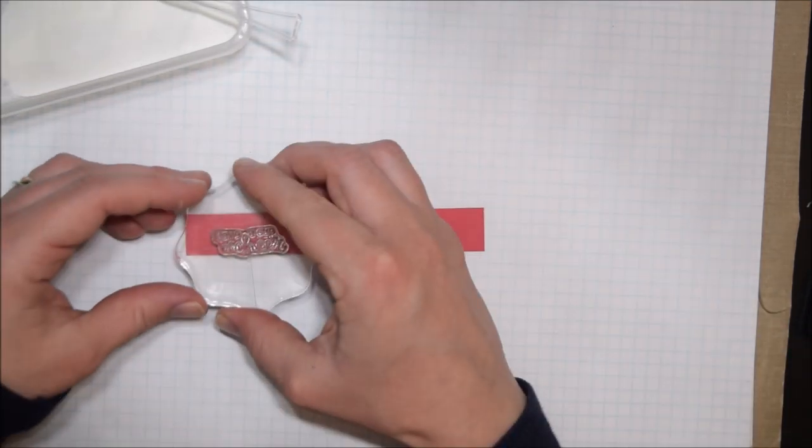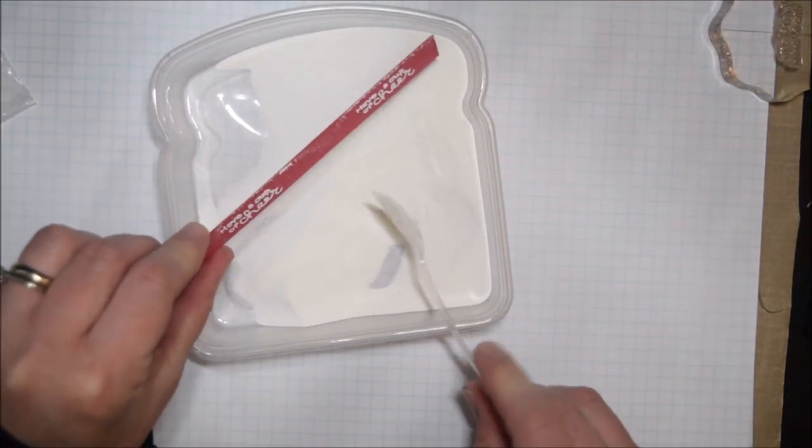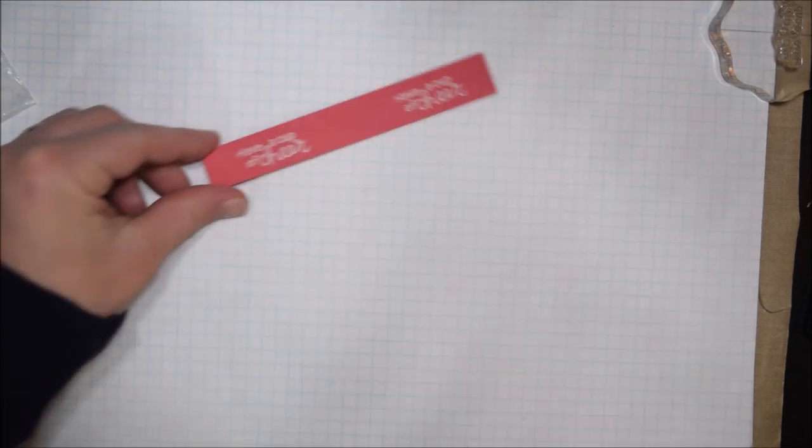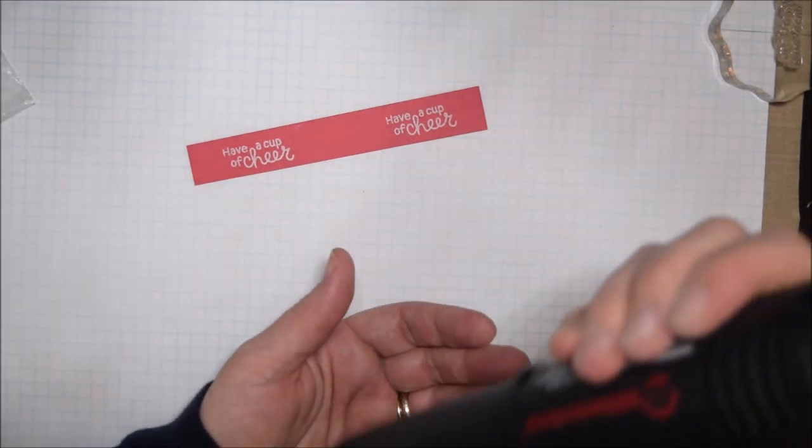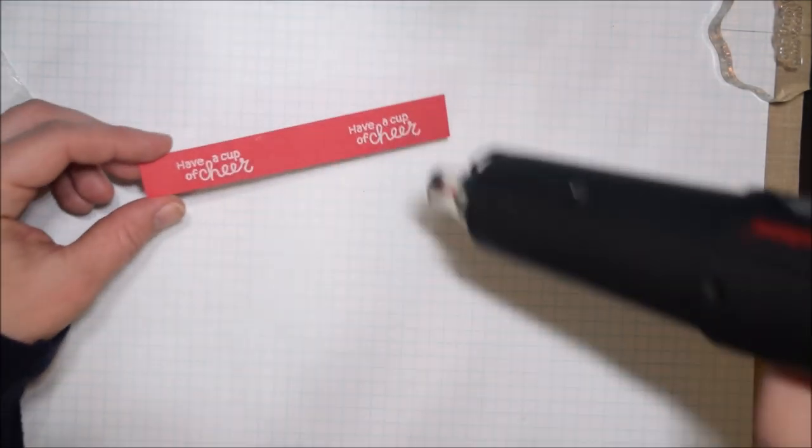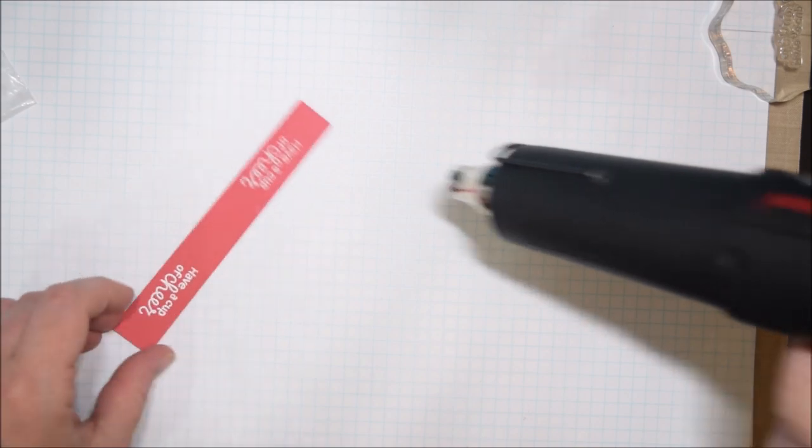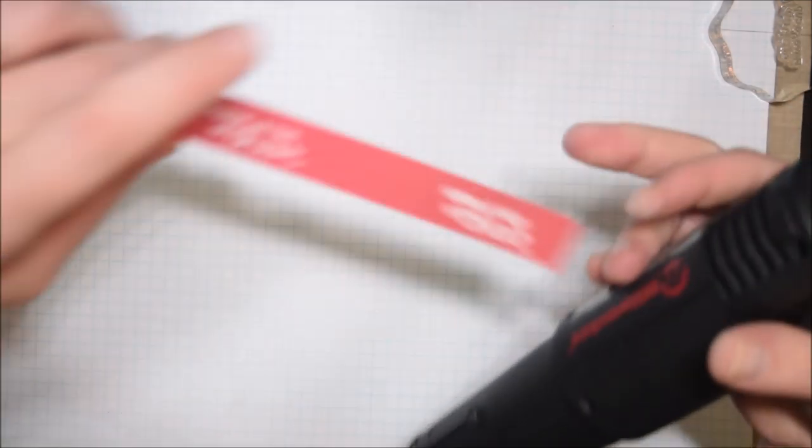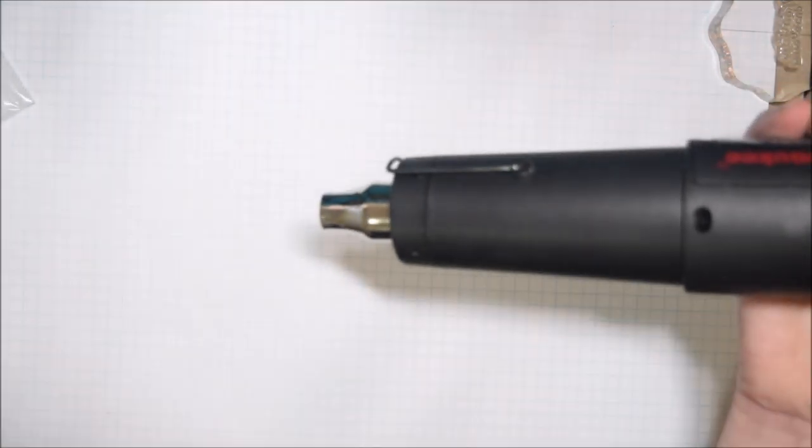I'm going to stamp the sentiment twice on each strip and then cut it down. Normally I'd cut it into a banner, but I wanted to go with something a little different and maybe more simple because part of my inspiration was donating these to the Caring Hearts card drive, which I will link in the video description. They were coming up on the deadline, but they did extend it a bit.